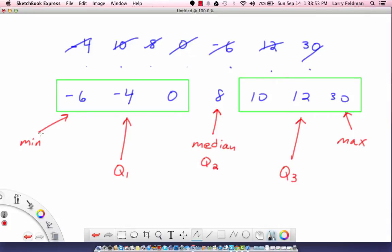Here are the five numbers in the five number summary: the minimum is negative 6, q1 is negative 4, the median or q2 is 8, q3 is 12, and the max is 30.